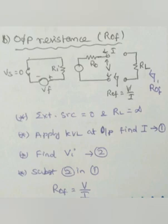First thing, the external source voltage should be kept as zero and RL load resistance should be disconnected. Second, you have to apply Kirchhoff's voltage law at the output and find the current I. That can be the equation number 1.